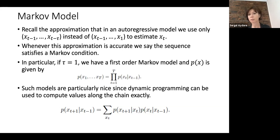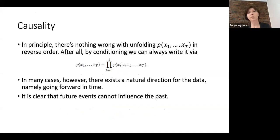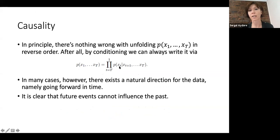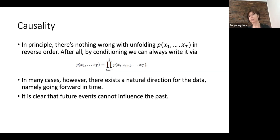Markov models are particularly nice because we can use dynamic programming to compute values along the chain. You can unfold probabilities from x_1 to x_T in either direction, but in many cases there is a natural direction for the data going forward in time. To predict today it makes more sense to look at the past instead of the future, and since future events cannot influence the past, we call this causality — there is a causal relationship between inputs.